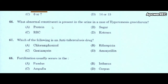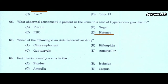Next question: what abnormal constituent is present in the urine in case of hyperemesis gravidarum? A) protein, B) sugar, C) RBCs, D) ketones. Correct answer is ketones. The abnormal constituent present in the urine in case of hyperemesis gravidarum is ketones.